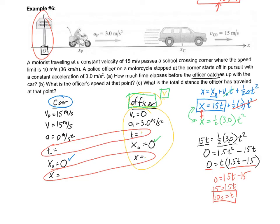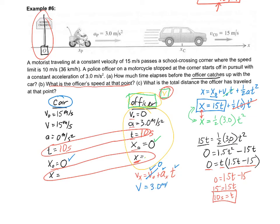Now everything else should be easy since we have time. Part (b) asks for the officer's speed at that point. Using v = v₀ + at, with initial velocity zero, acceleration 3.0 m/s², and t = 10 s: v = 3.0 × 10 = 30 meters per second.